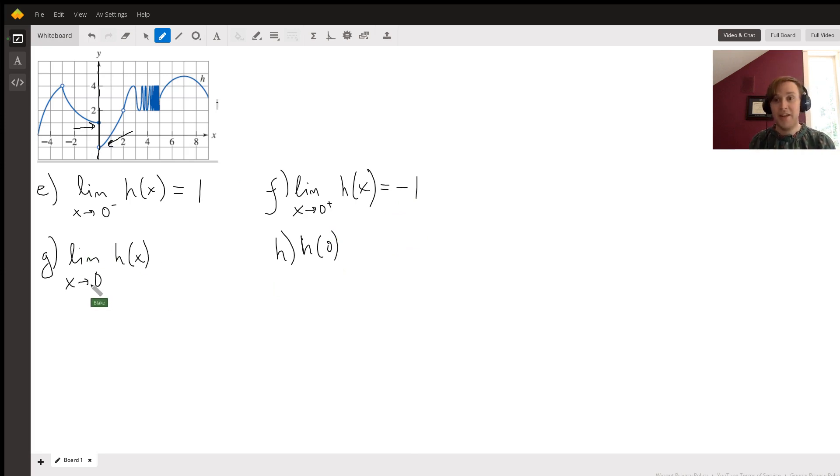So for part G, now this is asking for the limit as X approaches zero of H(X). So if we're asked for the limit as X approaches a number and we don't have any plus or minus after, what that means is that we're trying to see which number we get when we approach X equals zero on both sides. And here's the thing. These have to agree.